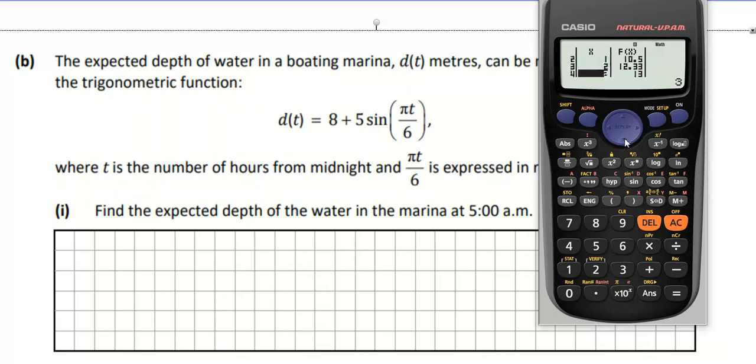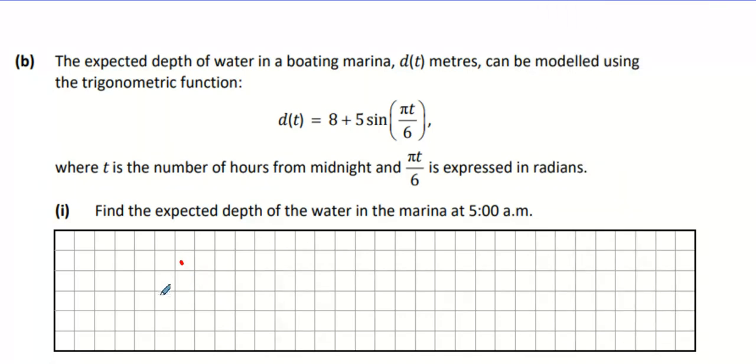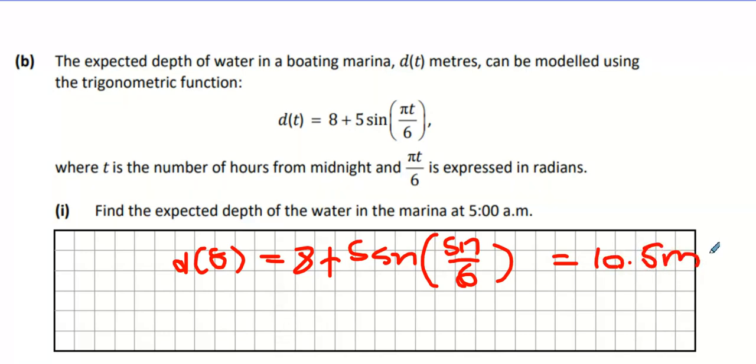After 5 hours, my depth is 10.5. So get this. It's going to be d5. And you're replacing in 5 for the t value. Now, my calculator has already done this for me. It's going to be 5 pi over 6. And the answer is 10.5 meters.